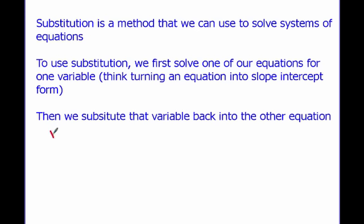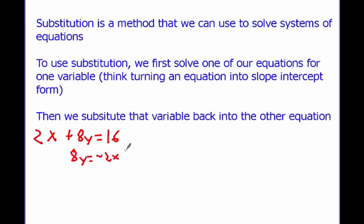For example, we can say 2x plus 8y equals 16. If I solve for y, that means 8y equals negative 2x plus 16. Divide by 8: y equals negative one-fourth x plus 2. That's what we mean when we say 'solve one equation for one variable' — I solved for y here.